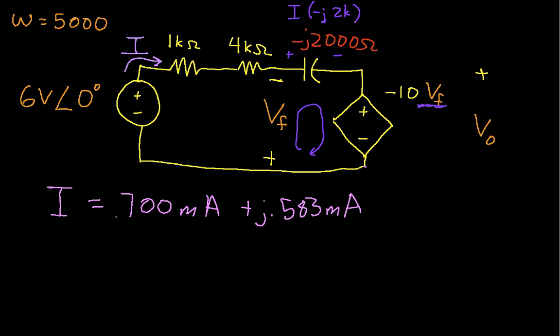We've already gone through this idea once where we use KVL around the purple loop. So we have then that I times minus J2k minus 10 Vf plus Vf is equal to 0. This is just applying KVL around this loop again. And now we know what I is.